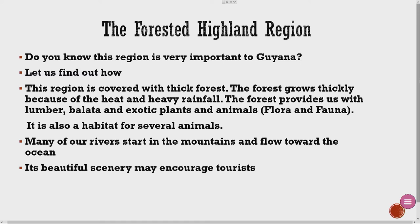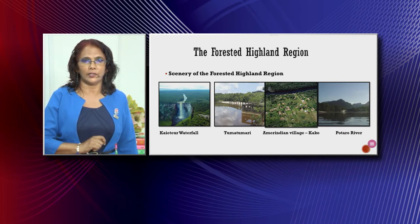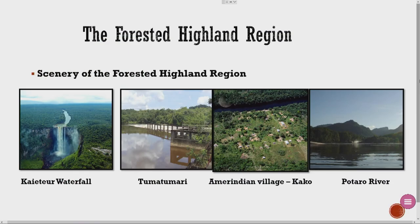That is the flora and fauna. It is also a habitat for several animals. A habitat is a place where animals or organisms dwell. Many of our rivers start in the mountains and flow towards the ocean. Its beautiful scenery may encourage tourists. There we have our famous Kaichur waterfall, then we have Chumachamari — that is an Amerindian village — and another Amerindian village, Keiko, and a beautiful scene in the Pataro River.